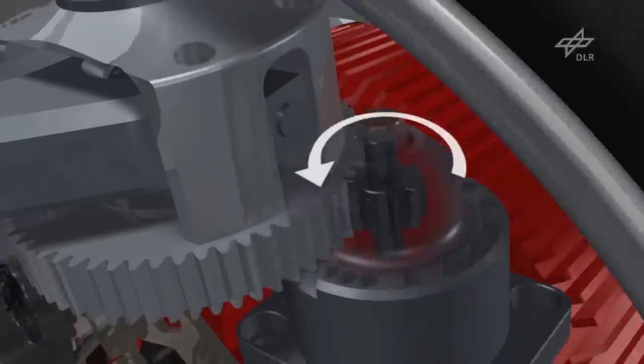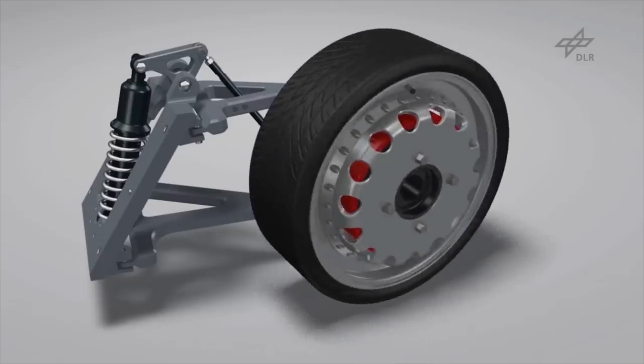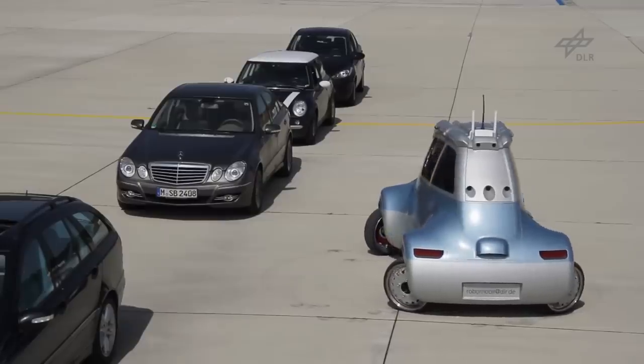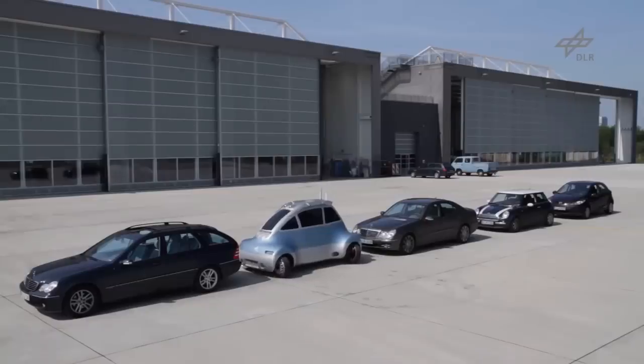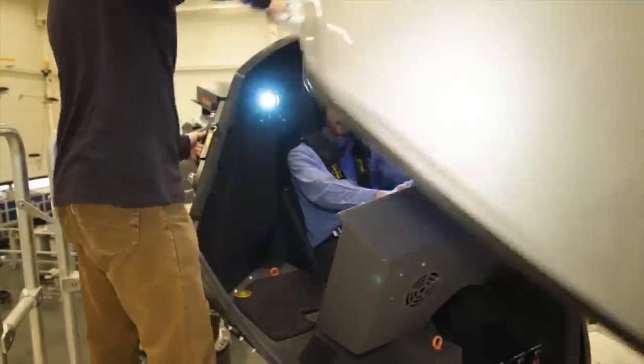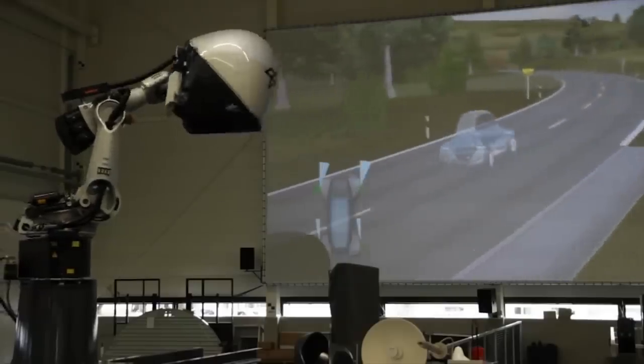At the same time, wheels can rotate around 90 degrees in either direction, allowing the electric car to turn in place as well as to move sideways and diagonally. Wheel robots are controlled both from the inside with the help of a joystick and remotely.